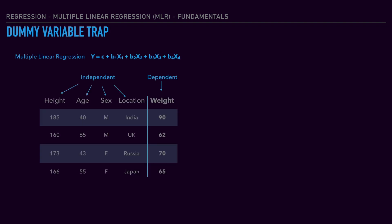Now let's get a deep dive into dummy variables and understand the dummy variable trap. Let's map the independent variables with the MLR formula. What happens is x1 is height and x2 is age. But when it comes to x3 — sex — and location, those are random variables and can be considered as text data.